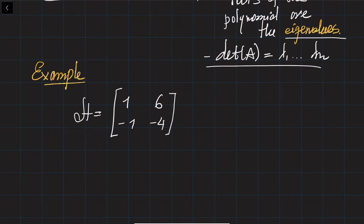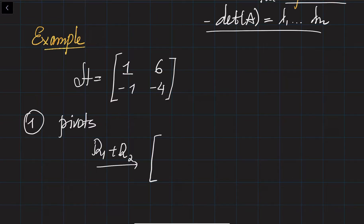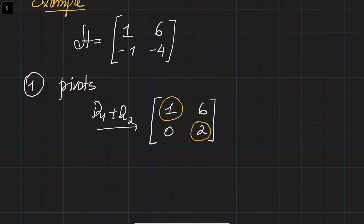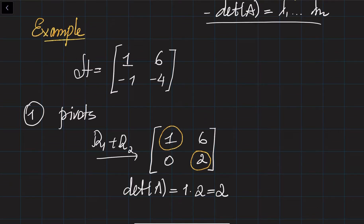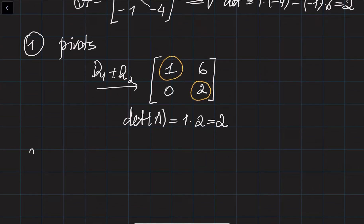Let's find the pivots first. To find the pivots, we bring this matrix to upper triangular form. We multiply the first row by 1 and add to the second, giving us the matrix: 1, 6, 0, 2. So the two pivots are 1 and 2, and the determinant of this matrix A is 1 times 2, which equals 2. We can verify: the determinant is 1 times minus 4 minus minus 1 times 6, which also equals 2.